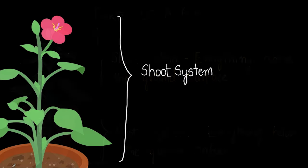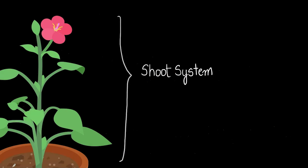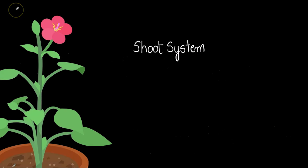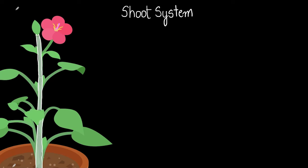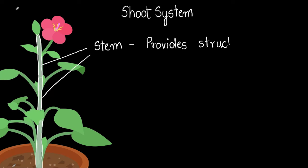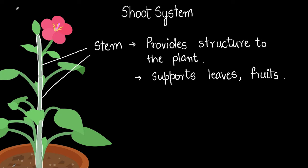Now let's dive into the shoot system. This part that you see highlighted here is called the stem. The stem provides structure to the plant. The stem is what supports the leaves, fruits, buds, flowers — everything.